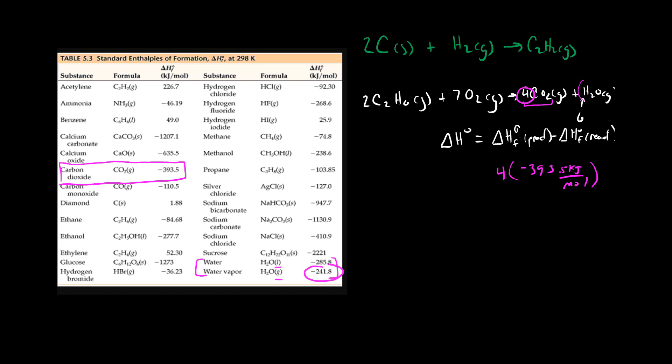In this case the enthalpy of formation of water vapor is negative 241.8 kilojoules per mole and we have six of these.